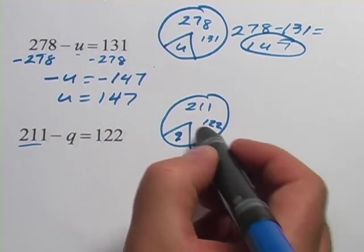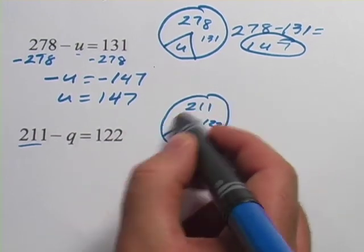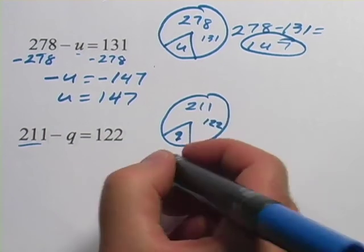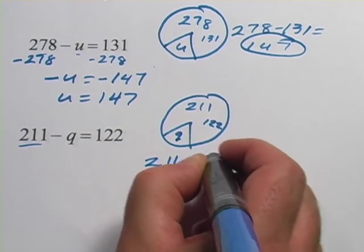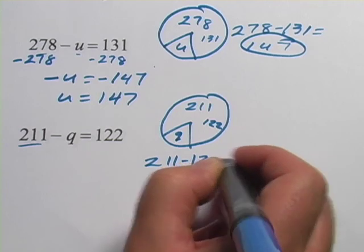So to find q, all we have to do is take away the 122 part, this part, from the 211. So 211 minus 122. And that, I think, is 89.